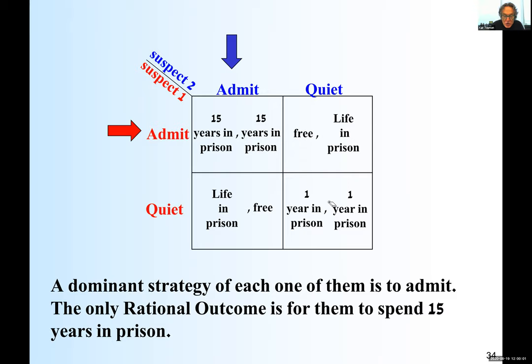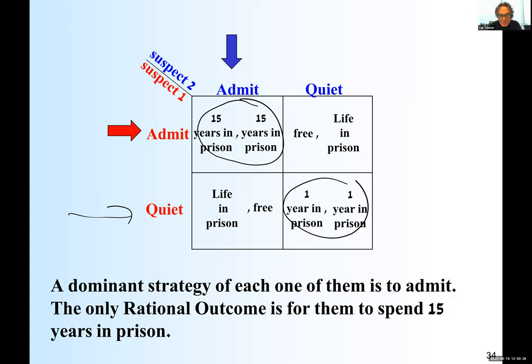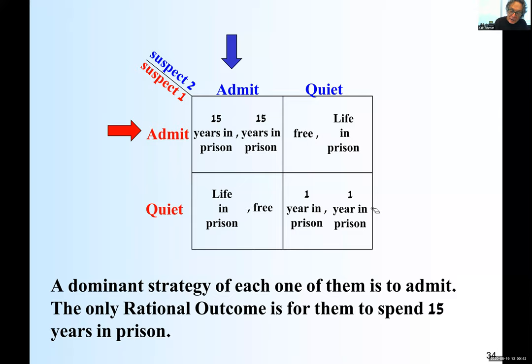If I could push your button and you could push my button, we'd both push quiet and spend only one year. The problem is we each control only our own button, and therefore it costs us 15 years instead of one year. As easy as this example looks, it takes time to absorb. It's not easy to understand what a dominant strategy is and how to play it.